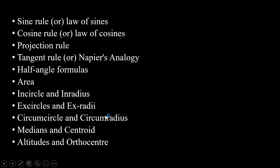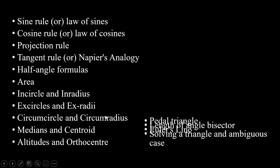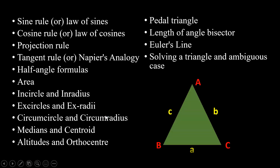These are the things we are going to look at in this chapter: sine rule, law of sines, cosine rule, and so on. The standard notation throughout this chapter: the vertices of the triangle are denoted by capital letters A, B, and C. The sides opposite to them are denoted by small a, small b, and small c. That is, the length of side BC is denoted by small a, the length of side CA is denoted by small b, and so on.